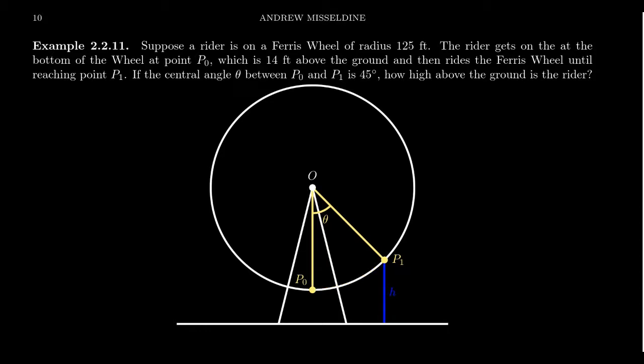So he's sitting there and our rider is thinking, how high above the ground would I be right now? Assuming that the central angle of this circle is going to be 45 degrees, how high is the rider going to be? So what is this distance H right here?